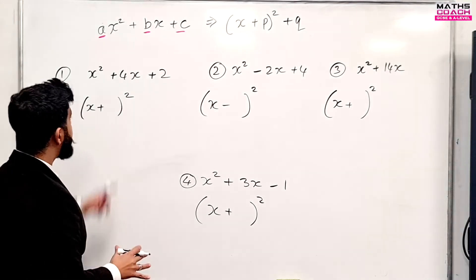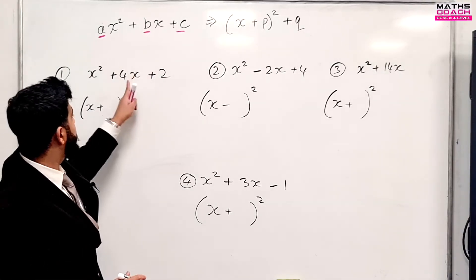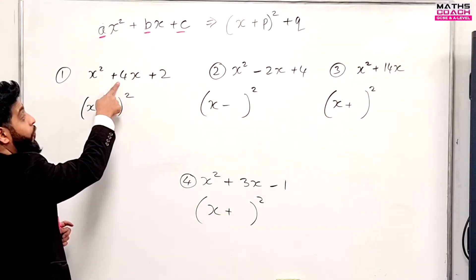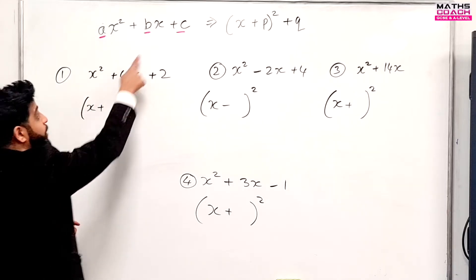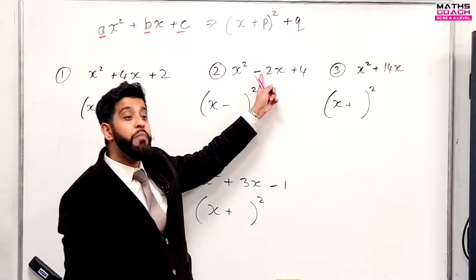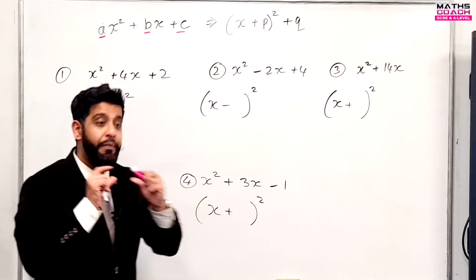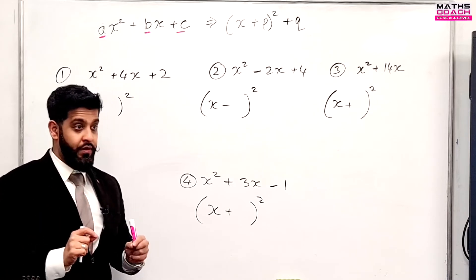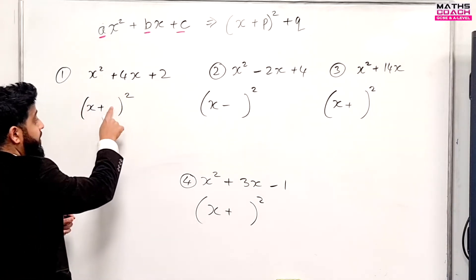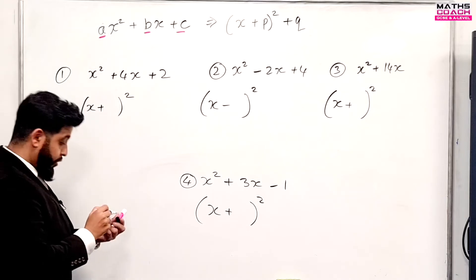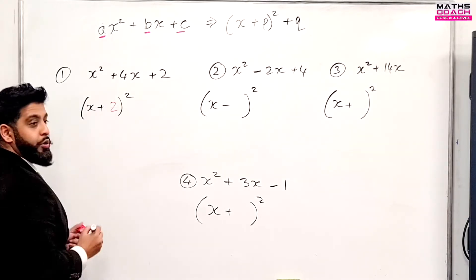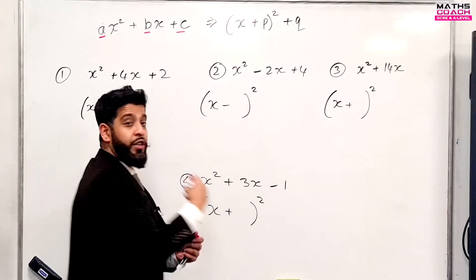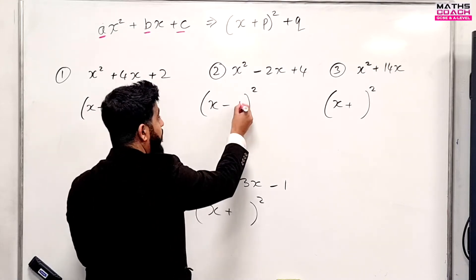Step number two: you take your B value — find the B value in every single one of these expressions. The B value in the first is four, and the B value in the second is minus two. What you do with that B value is put it in the bracket, but divide by two first. So four divided by two is two — put two here. Minus two divided by two is one — put one here.